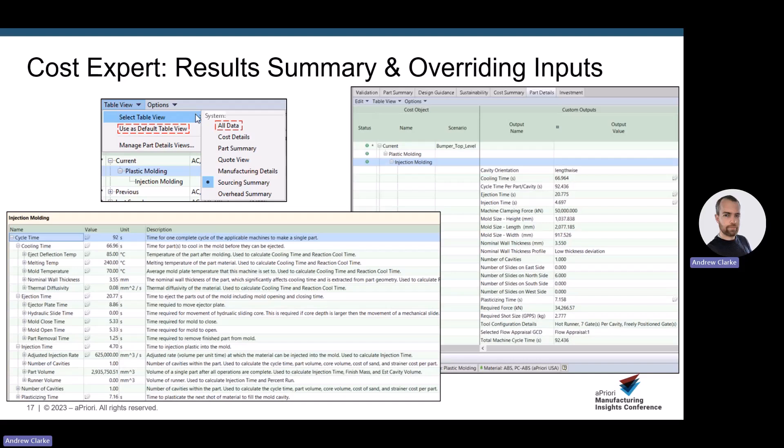We can interrogate the numbers and calculations that Apriori uses via the formula dependencies functionality. In the example here, we're looking at cycle time. Not only can we see what goes into cycle time calculation, but we can override those inputs even in real time to see the impact of any input change to the final results. This is invaluable functionality for fact-based negotiations when we may want to validate a supplier's justification for the delta between Apriori's numbers and theirs.